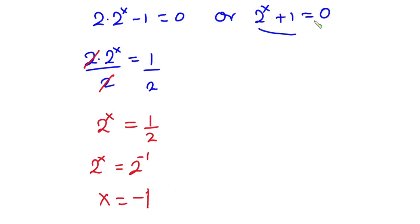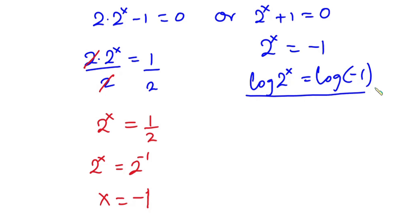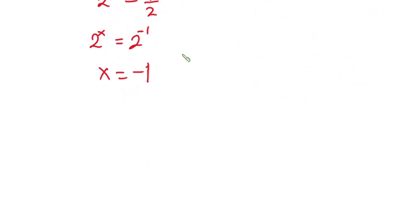Now focusing on the second factor: 2 to the power x equals negative 1. Introducing logarithms on both sides, we get log of 2 to the power x equals log of negative 1. But the log of negative 1 is indeterminate, so this equation can never be solved. We conclude that the only solution is x equals negative 1.